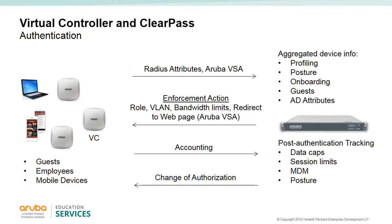The VC sends a RADIUS request with Aruba VSAs. ClearPass can aggregate the information and perform many actions such as profiling, posture, and onboarding. ClearPass can also interact with Active Directory and retrieve attributes. ClearPass returns a RADIUS message using Aruba VSAs with enforcement actions such as role or VLAN selections, bandwidth limitations, or redirect the user to a web page. The VC can send accounting information back to ClearPass for post-authentication actions such as implementing data caps, session limits, MDM use, or posture. If any post-authentication action is needed, ClearPass sends a COA (Change of Authorization) message to the VC.